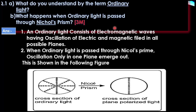Ordinary light consists of electromagnetic waves. It has electric and magnetic fields oscillating in all directions. The oscillation of a plane is restricted to one plane when polarized.